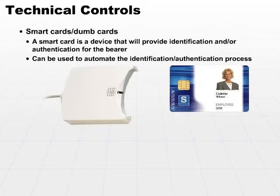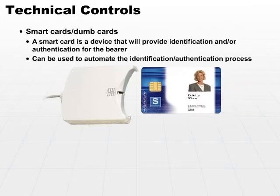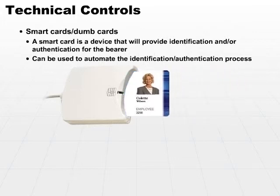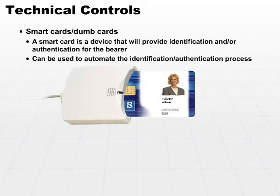You basically walk up to a reader, hold your badge up or swipe it, and it will read the information on it, validate that you're authorized to enter the particular secured area, and then either grant or deny the access.